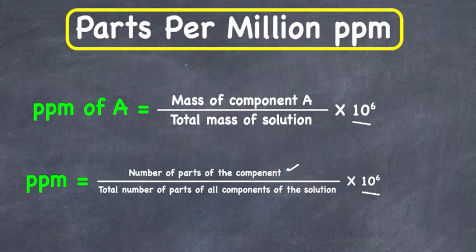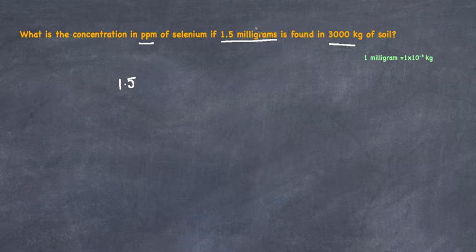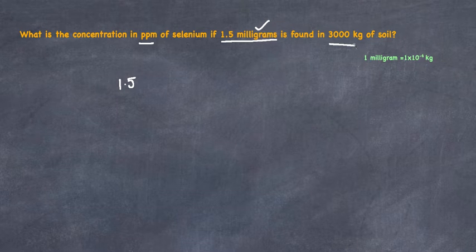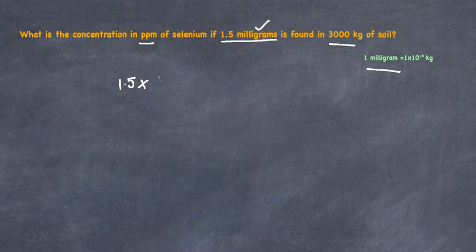As per the definition, PPM of a component equals the mass of the component divided by the total mass of the solution. The mass of the component here is 1.5 milligrams. One important thing: the unit for selenium is milligrams whereas the total solution unit is kilograms, so we must convert milligrams into kilograms first. The conversion is: 1 milligram equals 10 raised to power negative 6 kilograms.